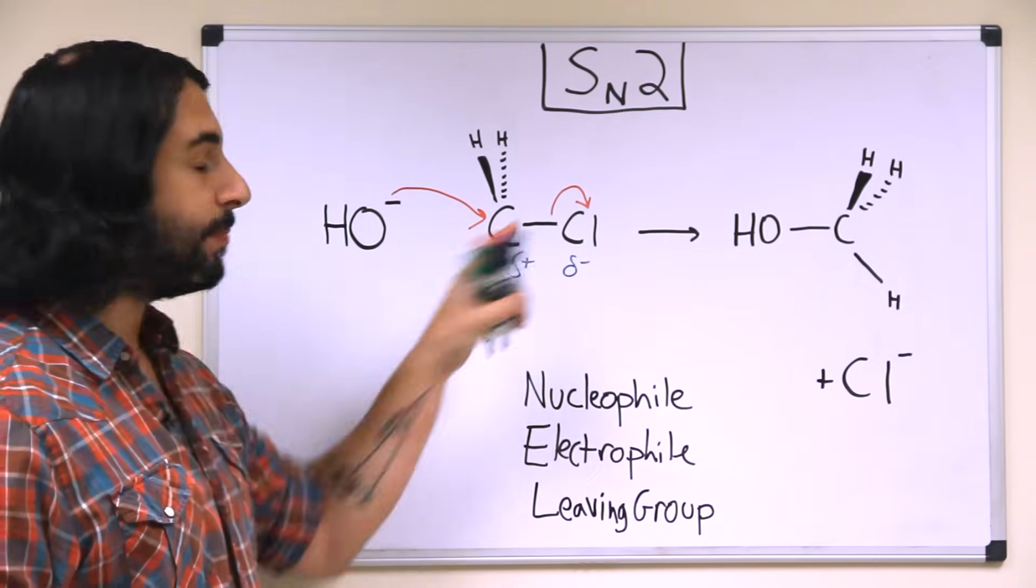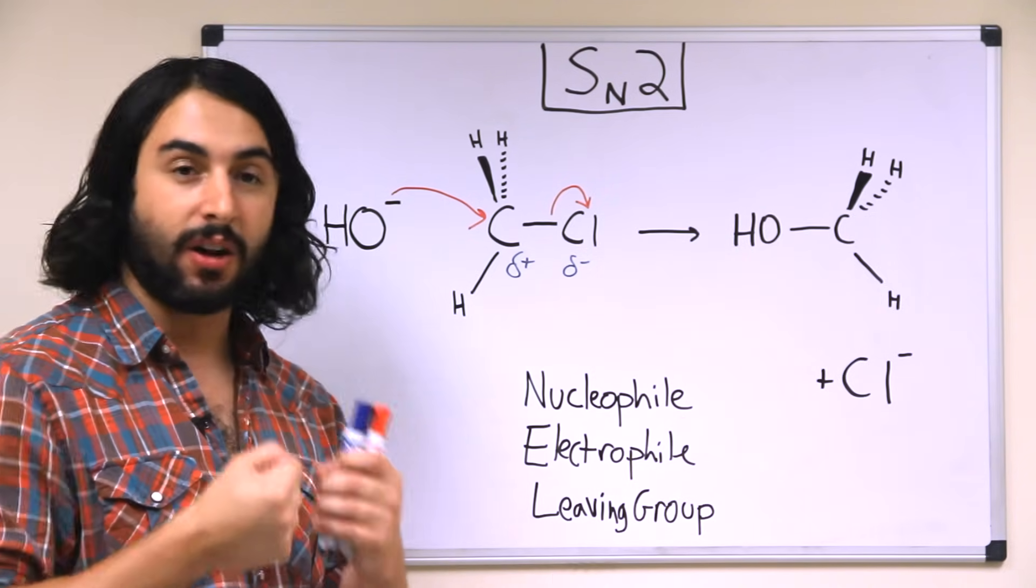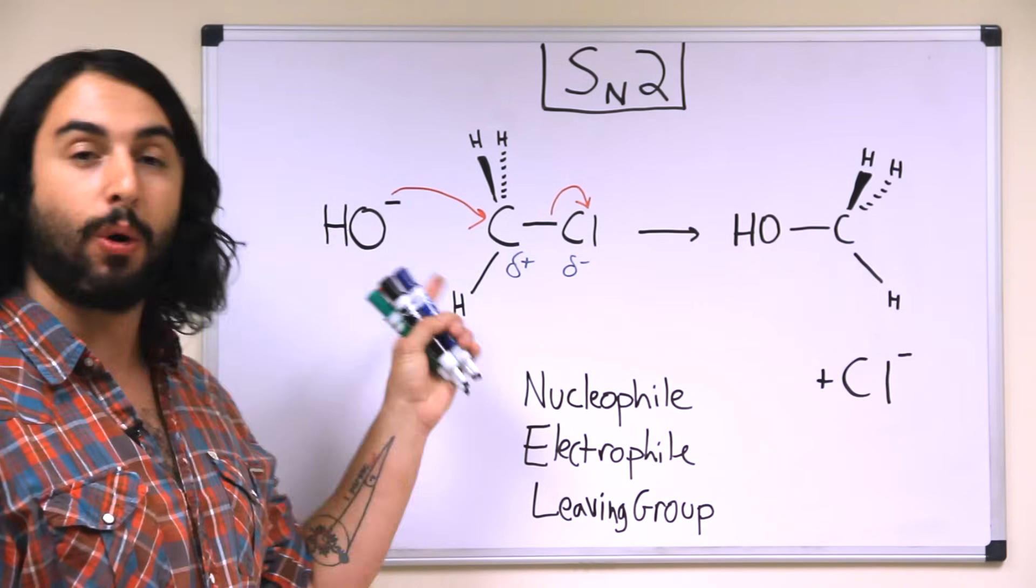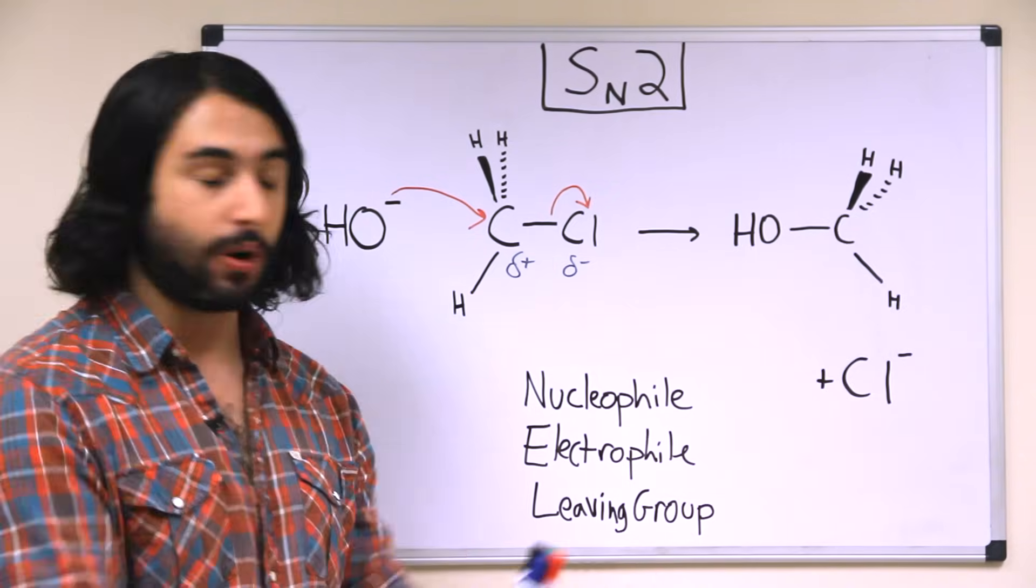therefore this is a polar covalent bond, meaning the electrons in that bond are being hogged a little bit more by chlorine, leaving a partial positive charge on that carbon. So a formal negative charge is going to be attracted to a partial positive charge.